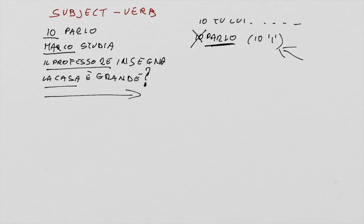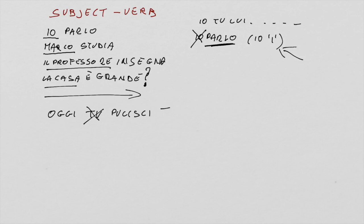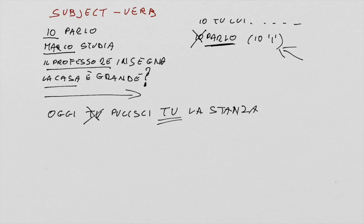So, in this case, instead of saying 'oggi tu pulisci la stanza', you would say 'oggi pulisci tu la stanza', because you want to mark that it's your turn. Every time you want to add emphasis to a phrase, you can change the order and put the subject after the verb.